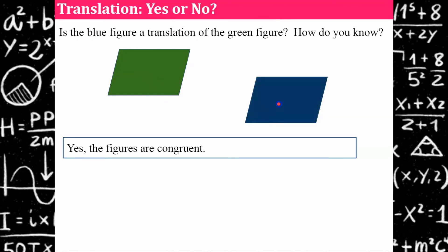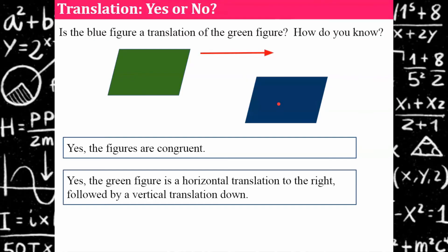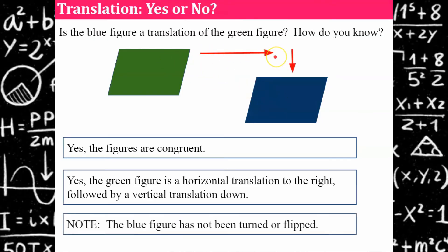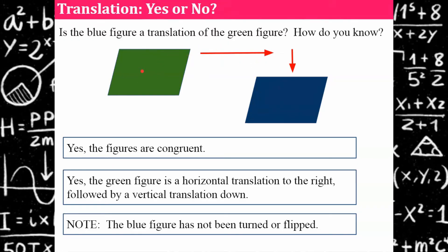All sides and angles are the same. The green figure has been translated horizontally to the right and vertically down. It has not been turned and it has not been flipped. Therefore, the blue figure is a translation of the green figure.